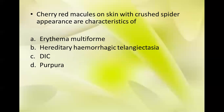Next question: cherry red macules on the skin with crushed spider appearance are characteristics of which condition? Options: erythema multiforme, hereditary hemorrhagic telangiectasia, DIC, purpura. The correct answer is B, hereditary hemorrhagic telangiectasia.